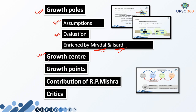We'll see how Hermanson further changed this concept with a few additions. Then we'll see the concept of growth point and the contribution of RP Mishra in the overall evolution of this theory. We'll also see major concepts like the multiplier effect, regional multiplier effect, and trickle-down effect. Then we'll see the critics — because any theory is incomplete without its critique. So let's discuss it one by one.